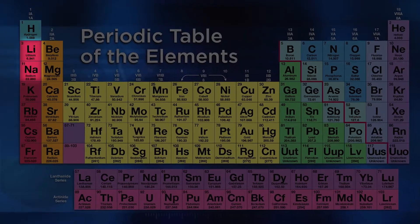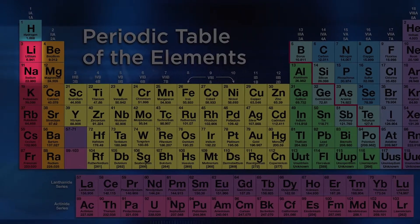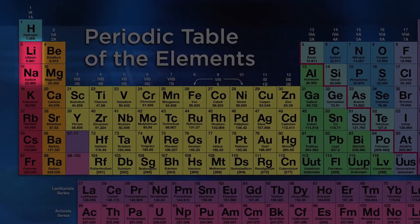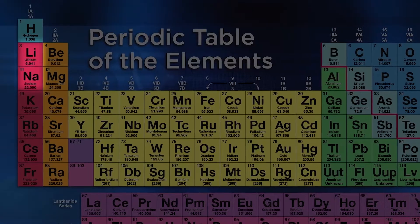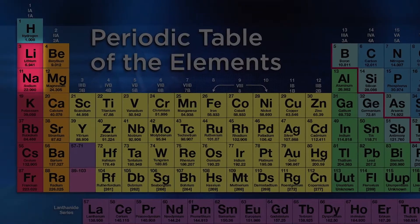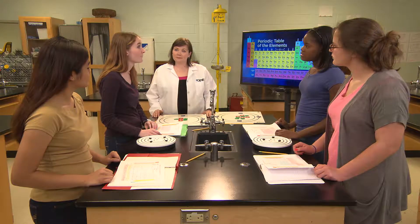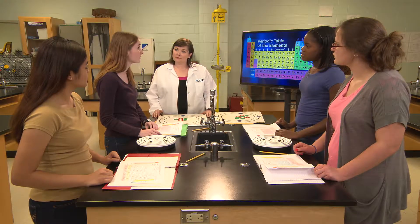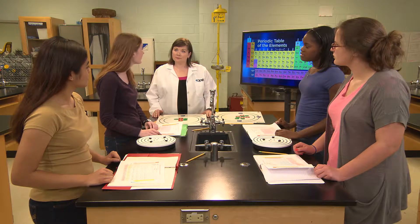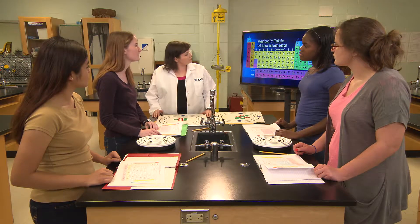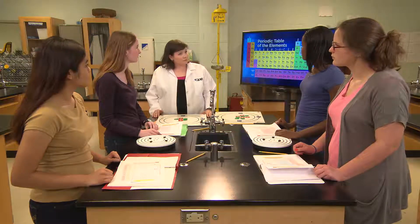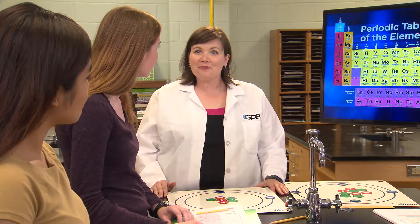Well, lithium and sodium both have one electron on the outside energy level. Did you notice anything else about lithium and sodium? They're both in the same column — column one. And they both have only one electron on the outside, but beryllium has two electrons on the outside and it's in column two. Good job of linking the periodic table to the Bohr models, Kat.